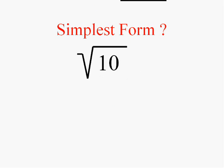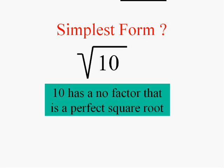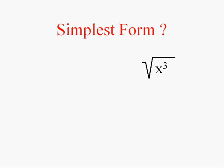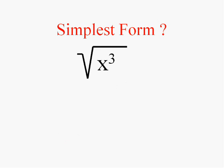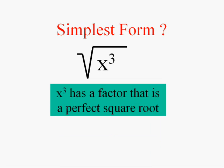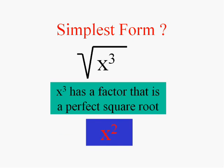The square root of 10 is in simplest form. Its only factors are 2 and 5, and neither of them is a perfect square. Since it has no factor that is a perfect square, it is in simplest form. The square root of x to the third is not in simplest form because it has a factor that is a perfect square — x squared is a perfect square and it goes in evenly to x to the third.